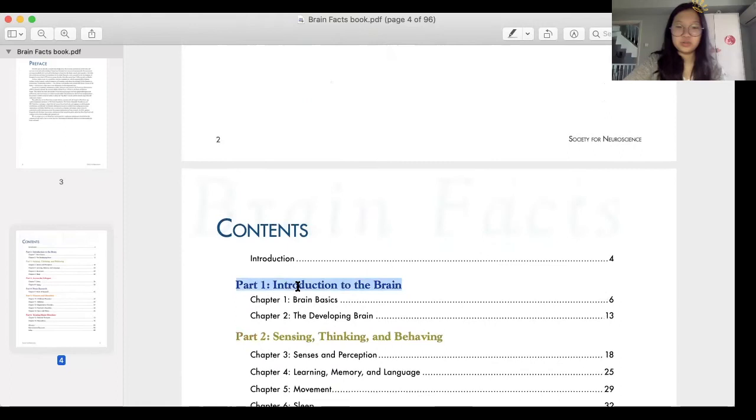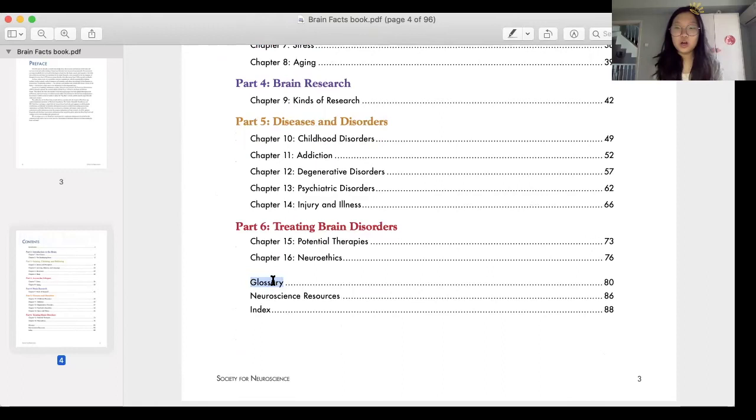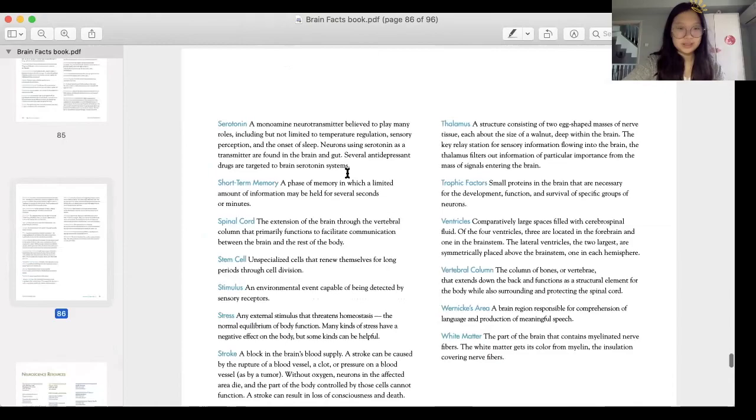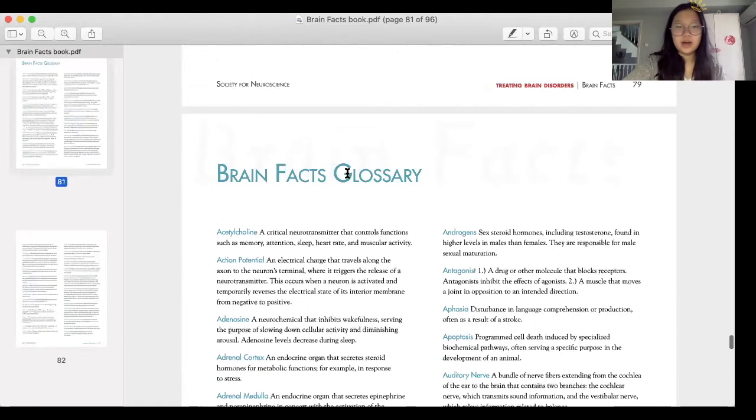The main part is Diseases and Disorders and then the introduction to the brain. Next we have glossary. Glossary is so important. I'll show you what glossary is. It looks like this. You have the words and they have the definition and what is it and what's the function. It's so important. You have to remember at least most of them because Brain Bee is just a competition about knowledge. It's important to know some basics. I made a quiz list about this and I'll put the link down too.